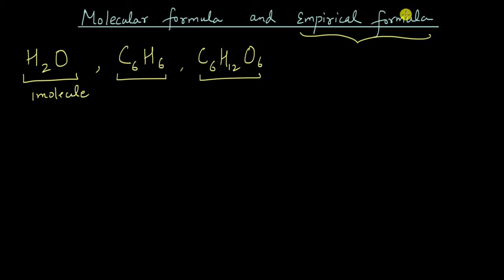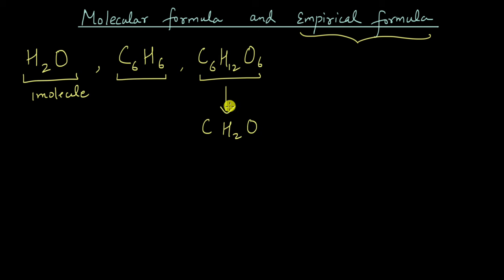Now, empirical formula on the other hand does not tell me information about the exact number of atoms, but it tells me the information about the ratio of the number of atoms. For example, for glucose, the empirical formula will be CH2O. What this is telling me is that for every one atom of carbon, there are two atoms of hydrogen and one atom of oxygen in a glucose compound. It's not telling me the exact number of atoms in one molecule, but it's telling me what the ratio of the atoms is.